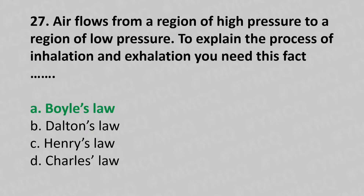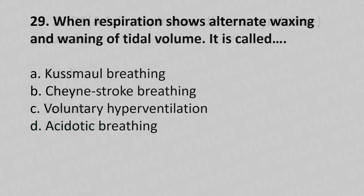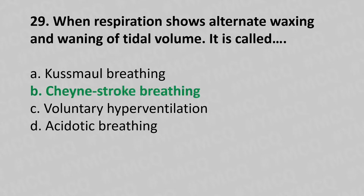Now let's move to question number 28. When respiration shows alternate waxing and waning of tidal volume, it's called. Option A: Kusmaul breathing. Option B: Cheyne-Stokes breathing. Option C: Voluntary hyperventilation. Option D: Acidotic breathing. And the answer is Option B, Cheyne-Stokes breathing.